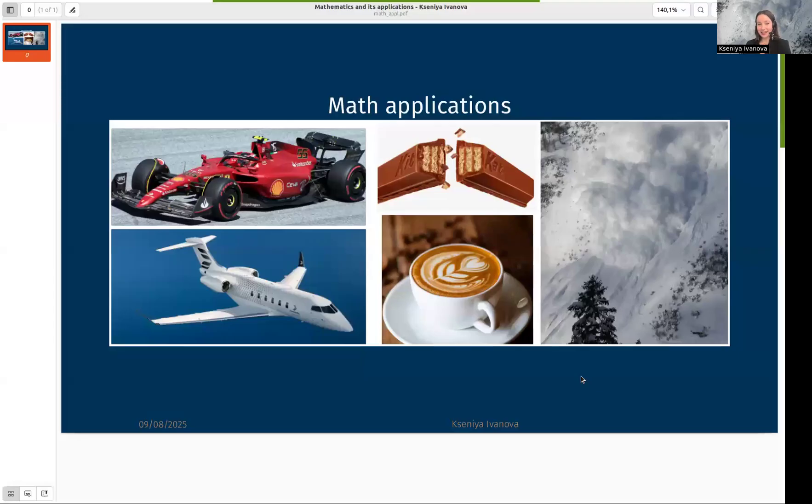Can you imagine that behind all these different objects there are the same kind of equations? I'm involved in designing Formula One cars, in designing aircraft, and also Kit Kat crunchiness and the flavor of your morning coffee, and also avalanche danger maps.